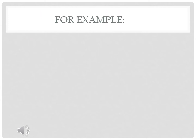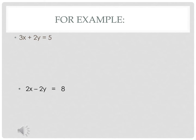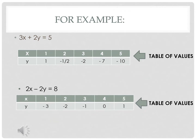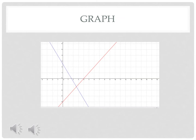For example, 3x + 2y = 5 and 2x − 2y = 8 is a system of linear equations. We create a table of values to find the coordinates of the points to graph. This is the graph of 3x + 2y = 5 and 2x − 2y = 8. This system of linear equations is consistent.